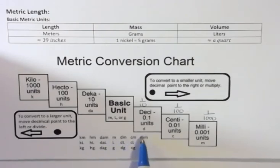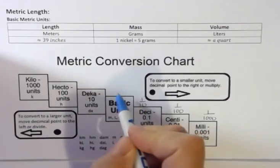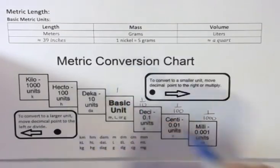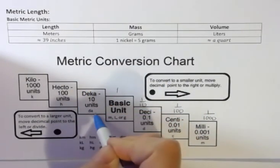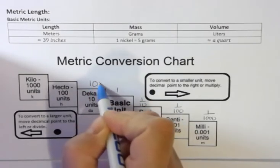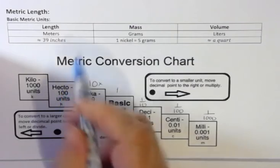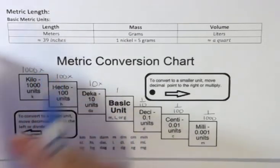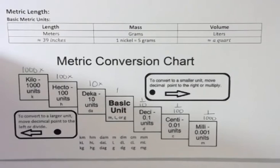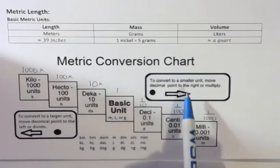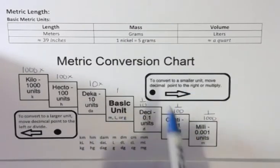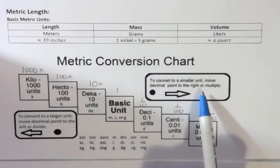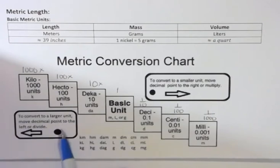On the chart, the basic unit is the meter. Going to the left, a decameter is ten times, a hectometer is a hundred times, and a kilometer is one thousand times — they get bigger going left and smaller going right. Everything is based on powers of ten, which makes conversion easy. To convert to a smaller unit, move the decimal point to the right or multiply. To convert to a larger unit, move the decimal point to the left or divide.